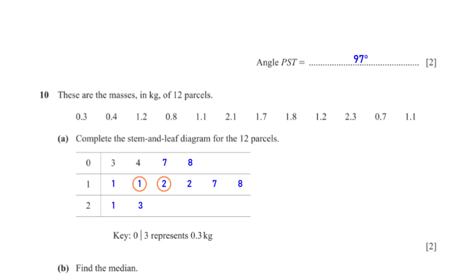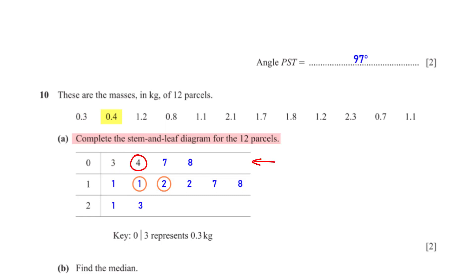These are the masses in kilograms of 12 parcels. Complete the stem and leaf diagram for the 12 parcels. The key is: 0|3 represents 0.3. For 0.3, the first number is 0, so we write 3 on that line — this has already been filled in. For 0.4, we write 4; also filled in. For 1.2, the first number is 1, so we write 2 on that line. We repeat this for all numbers, ensuring each line is in ascending order.